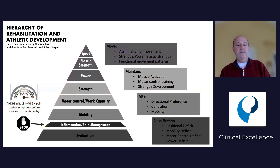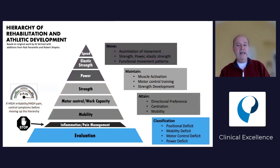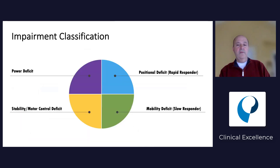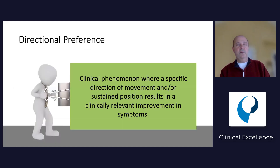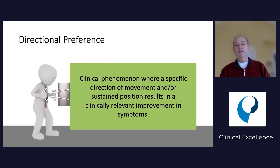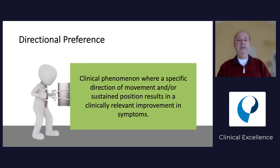Let's talk about the evaluation part - what classifications do we use? The first is called positional deficit, then mobility deficit, motor control deficit, and power deficit. We go into directional preference, which falls under the positional deficit. Directional preference is the clinical phenomena where moving in any direction or sustained position produces a clinically relevant improvement in symptoms - so less pain, improved range of motion, increased function. That's a general term.